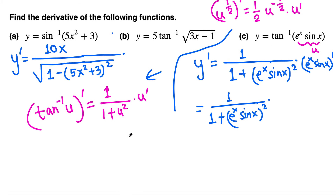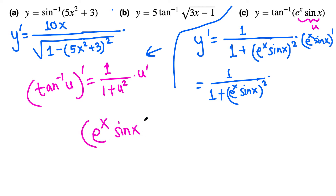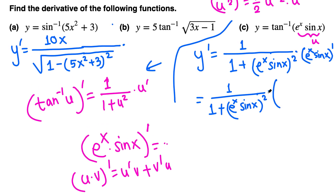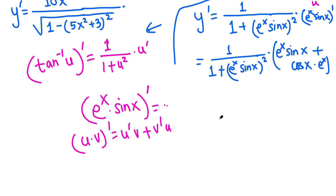Now eˣ sin x is a product, so we must use the product rule. The product rule for u·v gives u prime·v plus v prime·u. Here eˣ is u and sin x is v. So the derivative is: derivative of eˣ is eˣ, leave sin x alone, plus derivative of sin x is cos x, times eˣ.